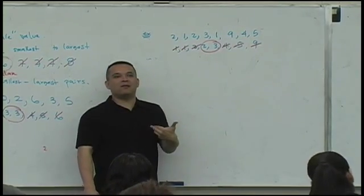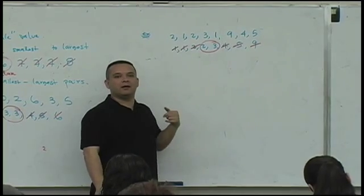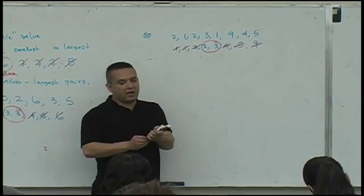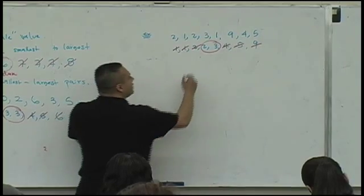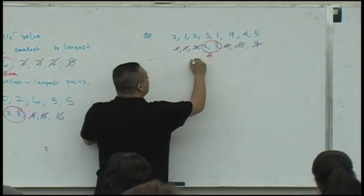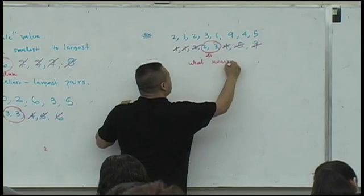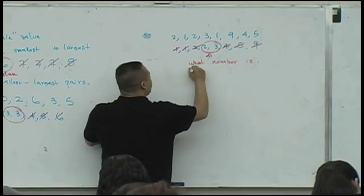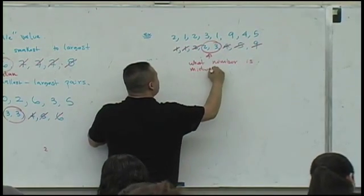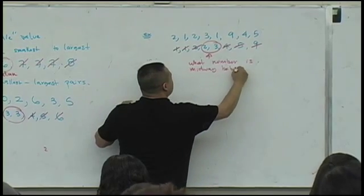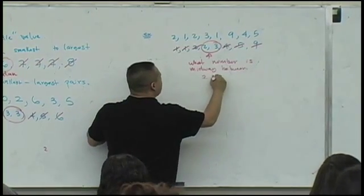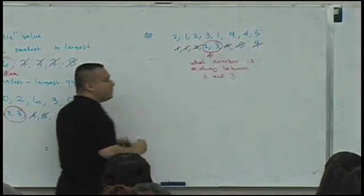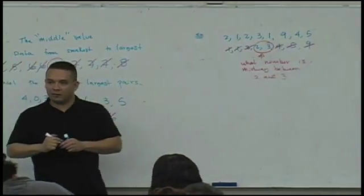Well, in some sense, you say there's two middle values, two and three. But this is what you do, and this is how you think about it. Can you guys answer this question? What number is midway between two and three? Remember that midway stuff?